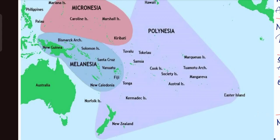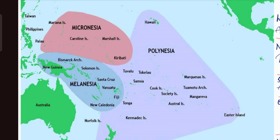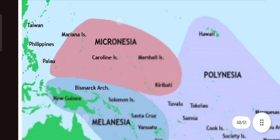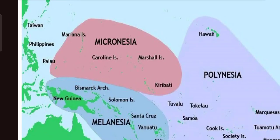Let us come to the Micronesia island. On the western side, there are two islands: Mariana Islands — near which there is the Mariana Trench, the deepest point of the earth — and below that, Palau Island. On the eastern side, there are two islands: Marshall Island and Kiribati Island.